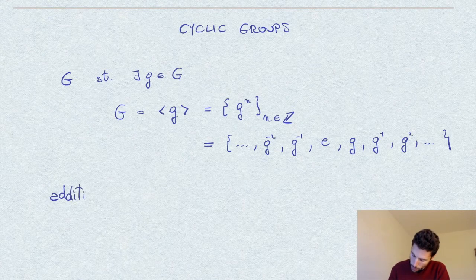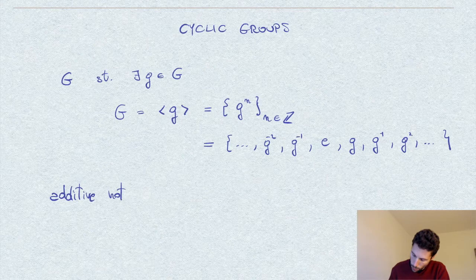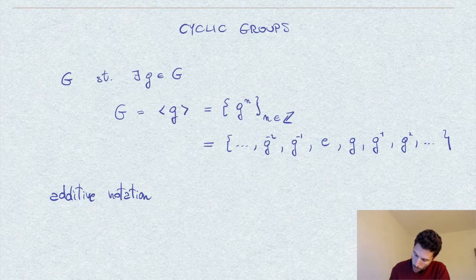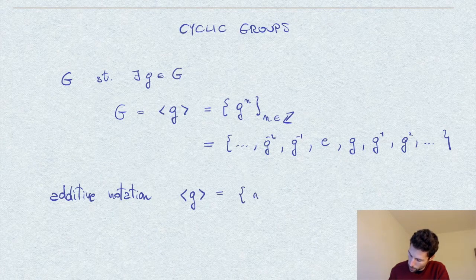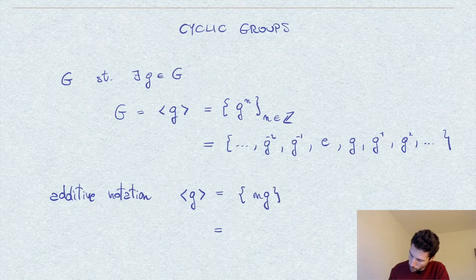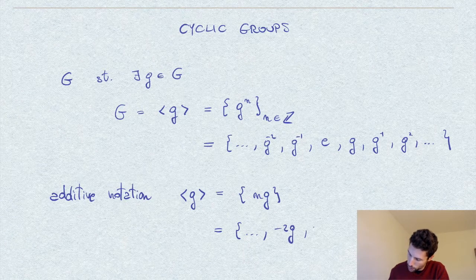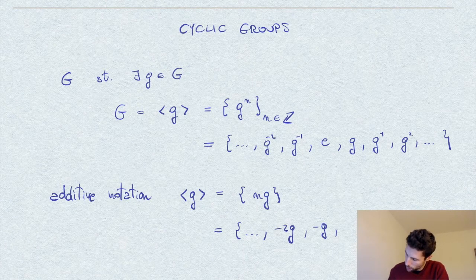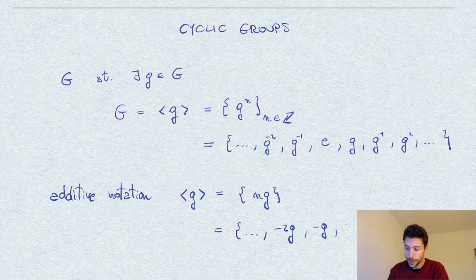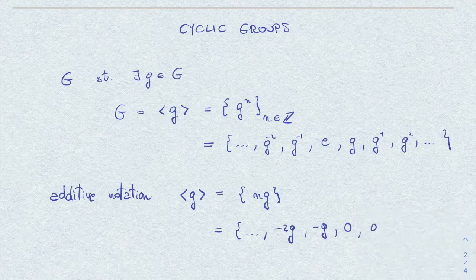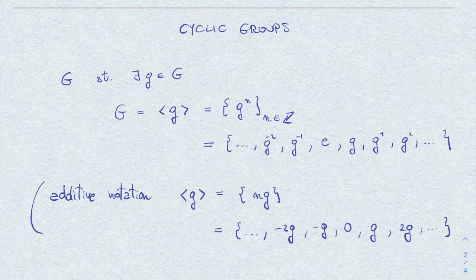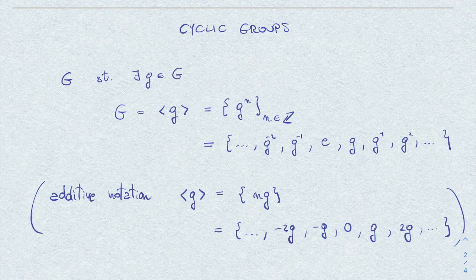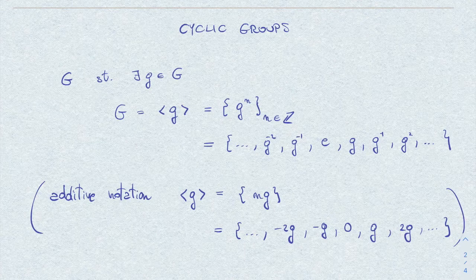In additive notation, this we would write it as follows: minus 2g, minus g. Well, in additive notation, usually the identity element is denoted as zero, and so on. So this was just a notational comment.